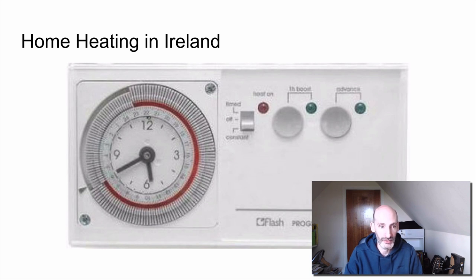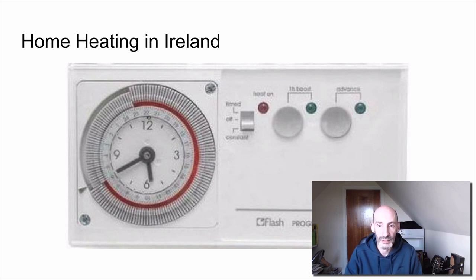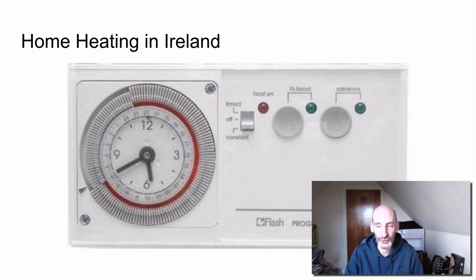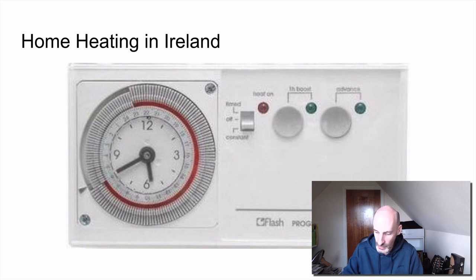In addition to this, these controllers typically have two functions — two round buttons. One is labeled Boost: if you're cold in spite of your programming, you push the Boost button and it runs the heating on top of whatever programming you have, usually for 30 minutes. The other one is called Advance: if you're cold and the heating is going to start in a little bit according to your programming, clicking Advance runs the next event — which could be a start or a stop — right now instead of at the programmed time. This is a very simple controller, the type I see most often here.